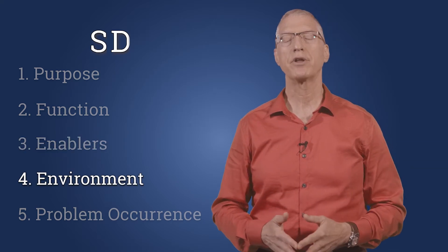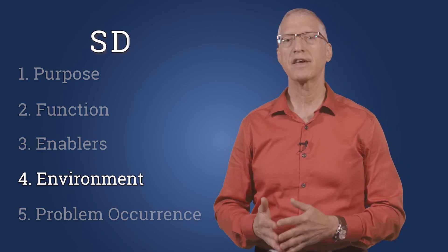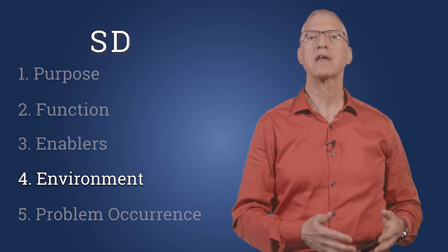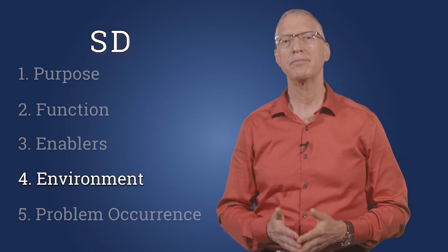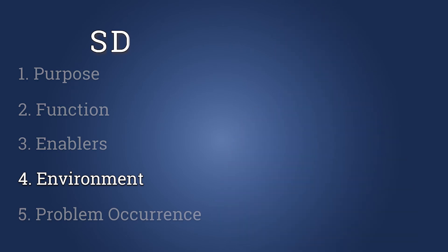The fourth SD component is the system's environment. What things, objects and processes, are not part of our system, but still affect its operation? Here, we include the fruit trees and the robot's transportation path. We can also include processes, such as wind blowing and rain falling, which can also affect the system's operation.